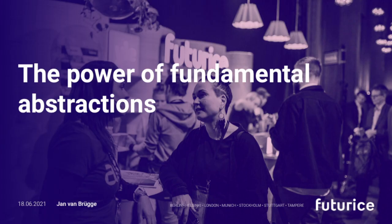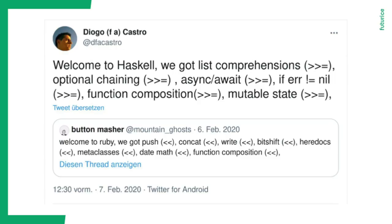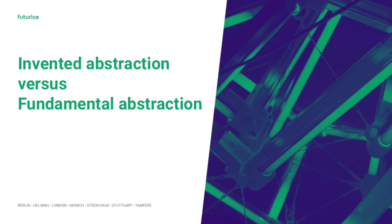So this whole talk is actually inspired by this tweet: 'Welcome to Haskell. We got list comprehension, optional chaining, async await, if error does not equal nil, function composition, mutable state.' This was an answer to a post about Ruby reusing operators for the same thing — for different stuff. And the difference between Ruby and Haskell here is what those operators mean. The difference is basically: is it an invented abstraction or is it a fundamental abstraction?